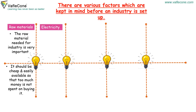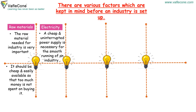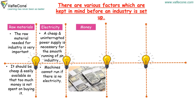Electricity: A cheap and uninterrupted power supply is necessary for the smooth running of an industry. Machines cannot run if there is no electricity.